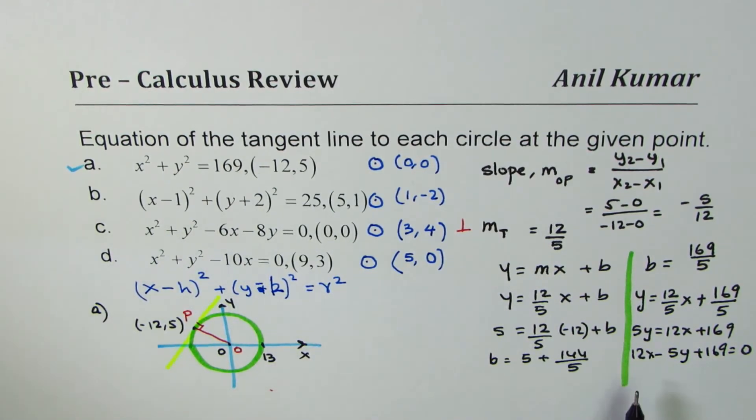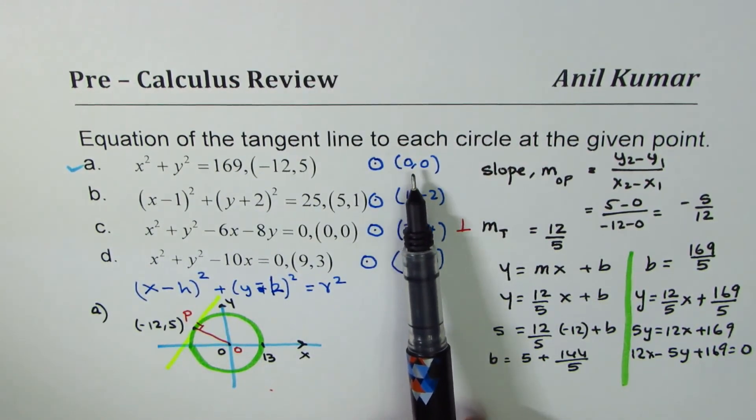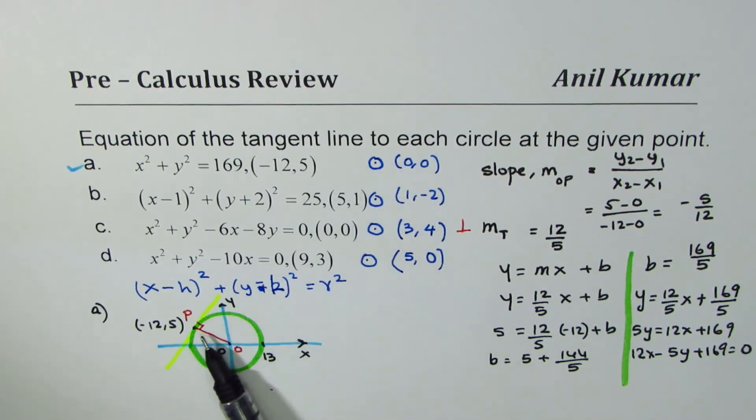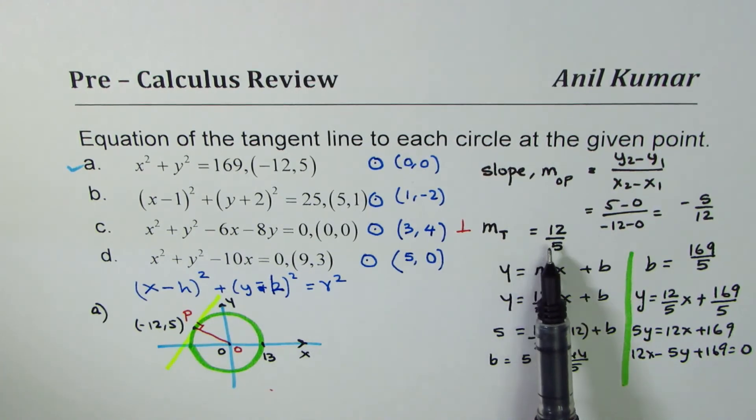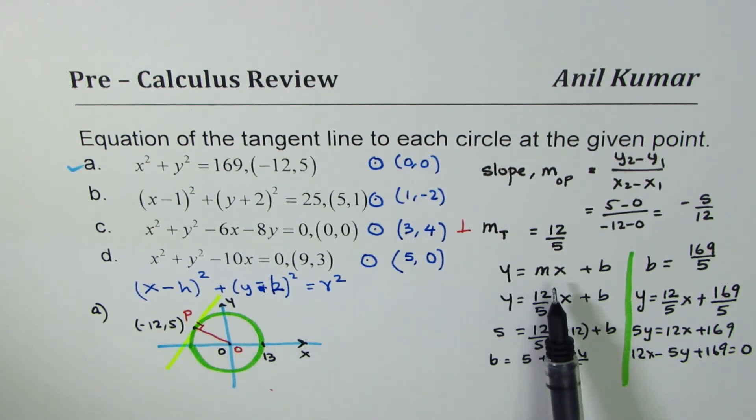But I hope the steps are absolutely clear. Once you know the center, then using the center and the given point, you can find slope of OP. Slope of the tangent will be negative reciprocal. Once you know slope of the tangent line and a point on it, then you can always find equation of the line. Different formulas can, of course, be used. I use y = mx + b.